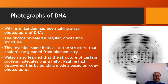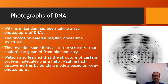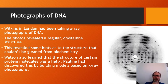Meanwhile, another scientist, Wilkins, in London had been taking X-ray photographs of DNA. If you're trained to read these photographs, they tell you that whatever is photographed has a regular crystalline structure — you can see the regularity in the lines and repetition. This revealed hints about DNA's structure. Watson had also discovered that some protein molecules were helical — a twisted, multi-strand structure like a spiral staircase.